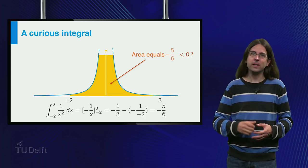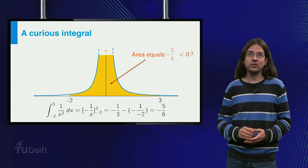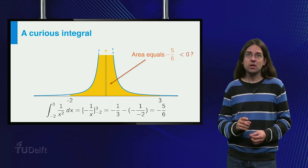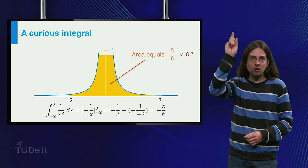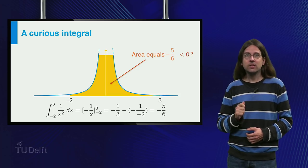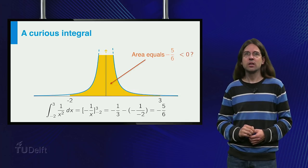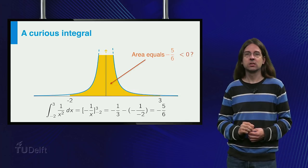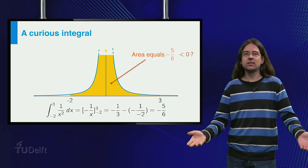To go back to the picture of the graph, you will notice that I did not draw the entire area, as the function becomes too big near the origin to draw. Indeed, near x equals 0, the function 1 over x squared becomes infinitely large, and at x equals 0 it does not even exist.